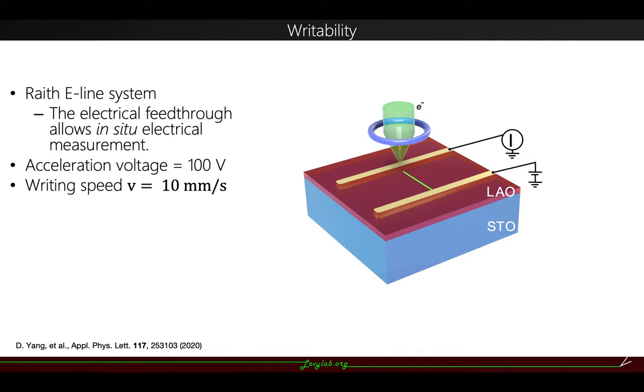First, I'll show the writeability of the ultra-low voltage EBL on the LAO-STO. To do that, we add the electrical feedthrough to the EBL system, which allows us to do in-situ electrical measurement during the writing. The acceleration voltage is 100V, and the writing speed is 10 millimeters per second.